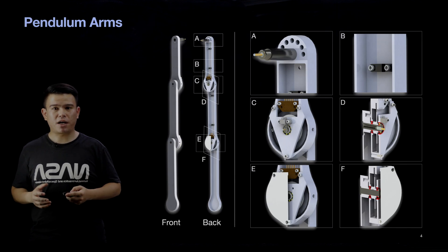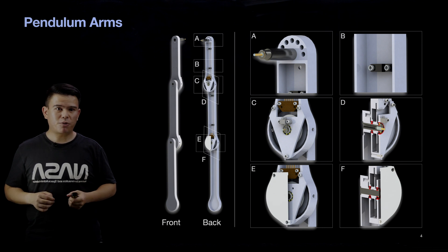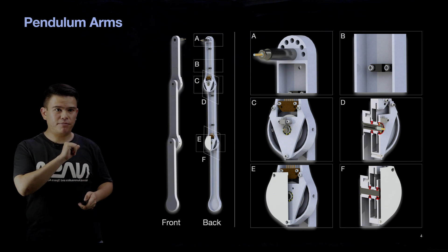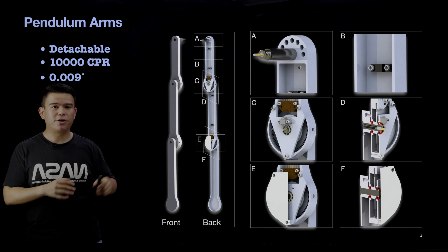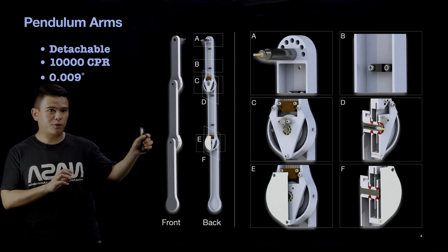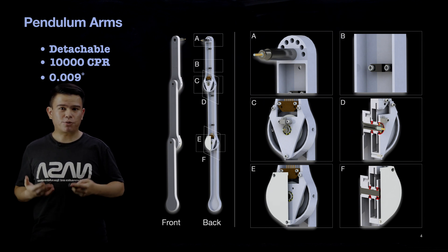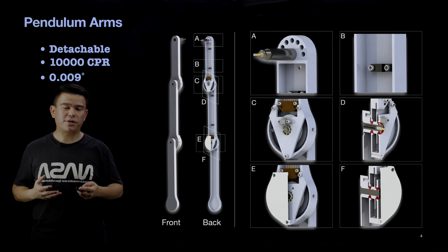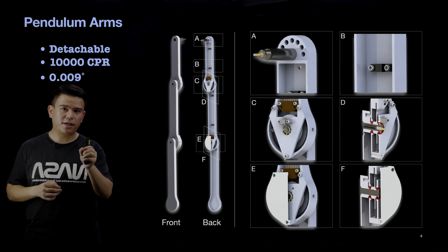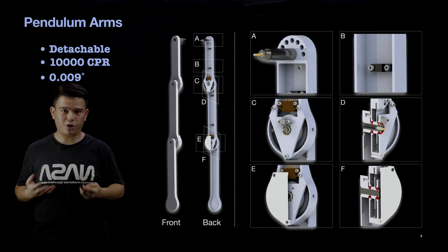Now I want to talk about some design details. The pendulum arm we used is actually a triple pendulum arm, but it is easily detachable — for example, you can remove one arm to make it a double pendulum, or remove one more to make it a single pendulum. It also has a high-accuracy sensor installed with 10,000 CPR, allowing us to detect really tiny movements of the pendulum arm down to 0.009 degrees.